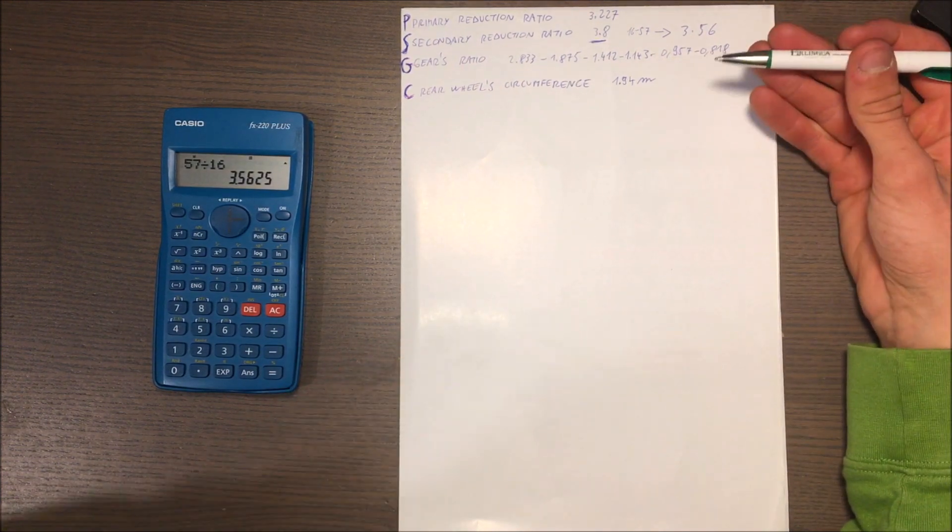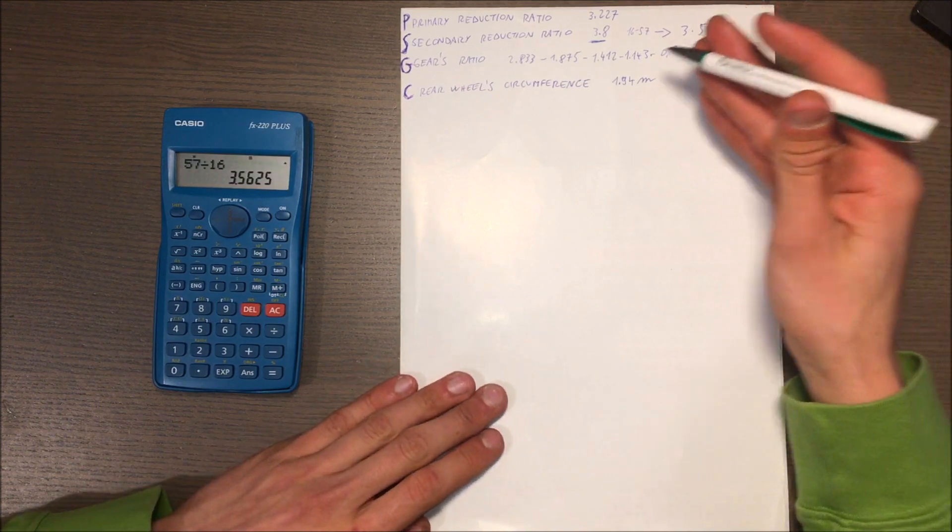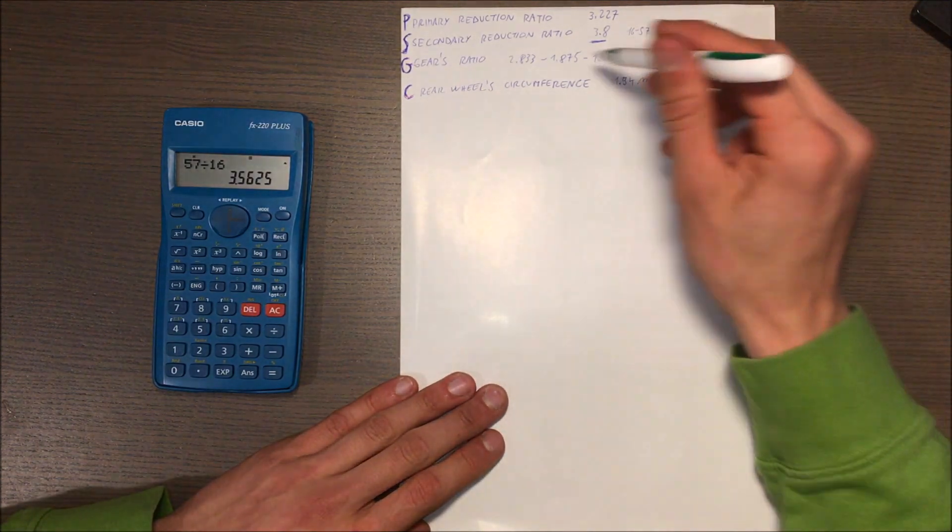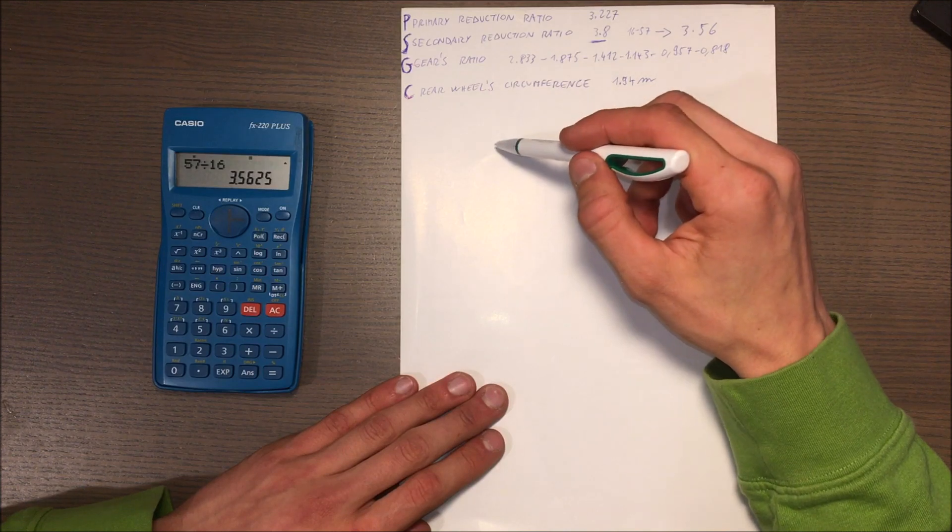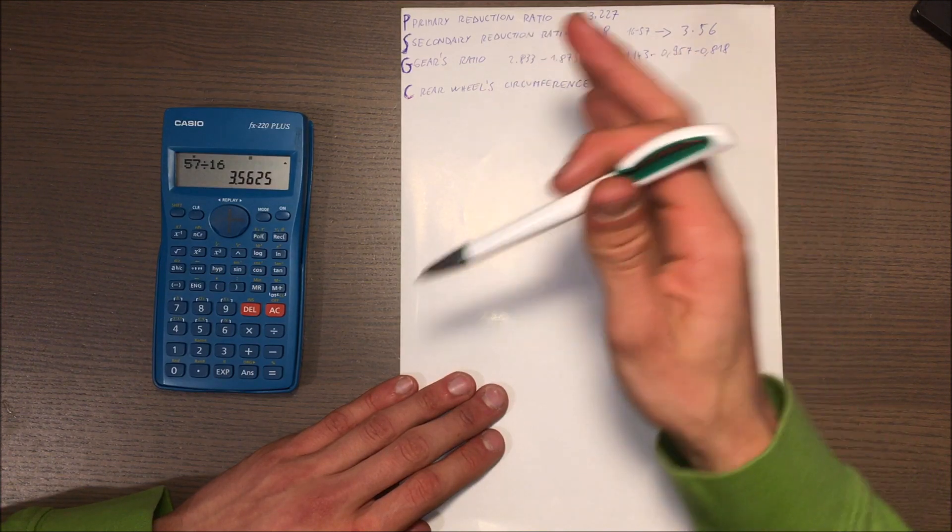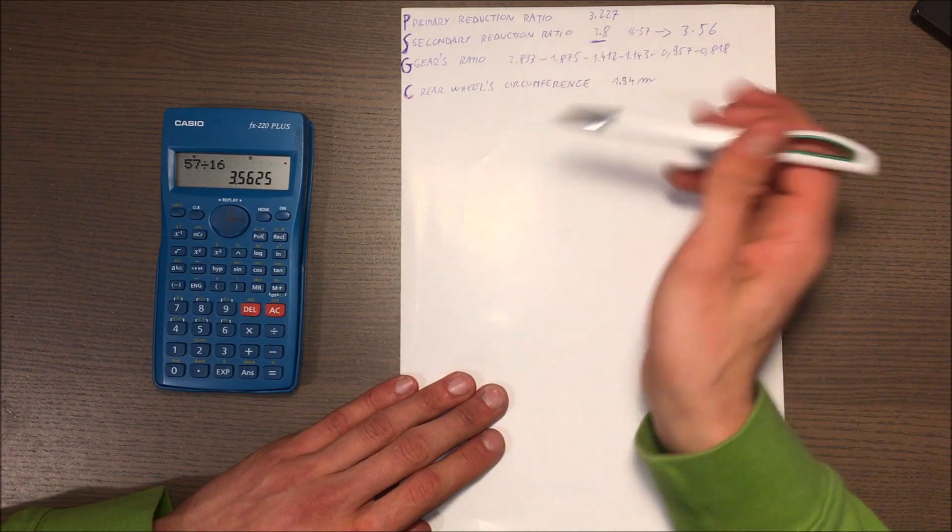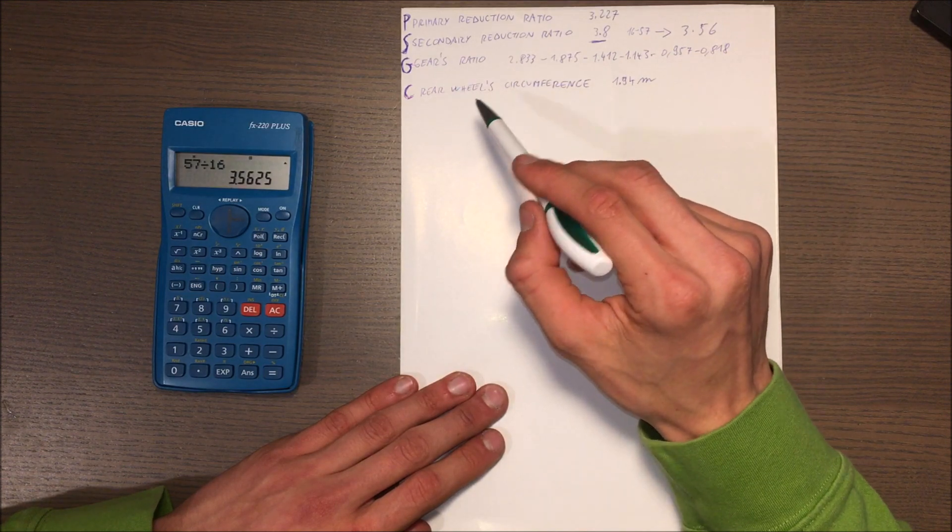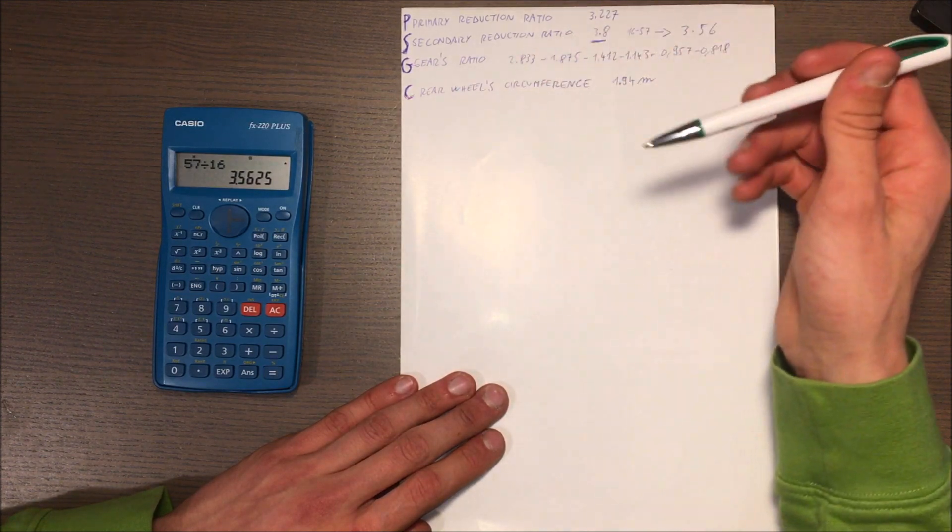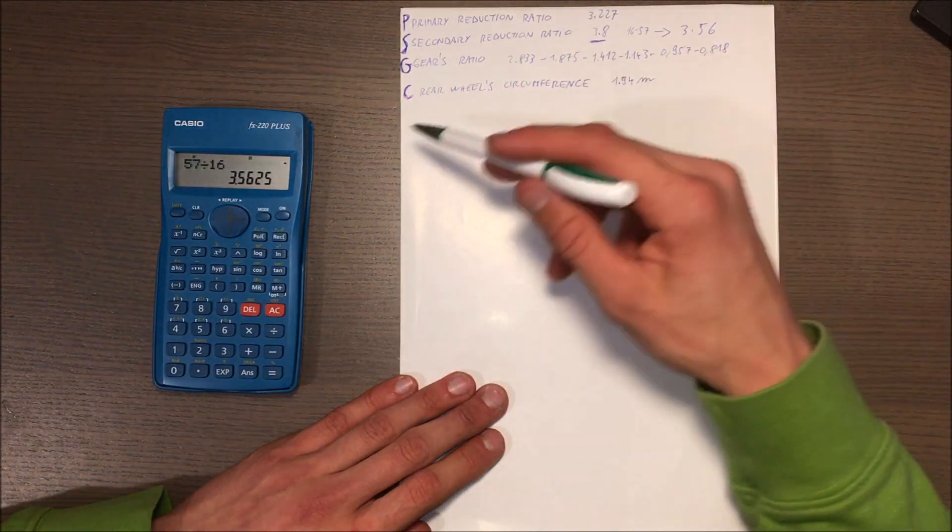It's pretty easy to measure it because you just need to put a sign on the ground, make the wheel do a complete rotation, then put another sign there. You can use the valve to know when the rotation is complete, the valve of the tire I mean. You just measure the distance between the two signs and you know what the real circumference is.